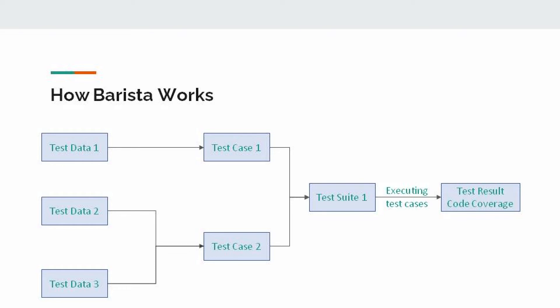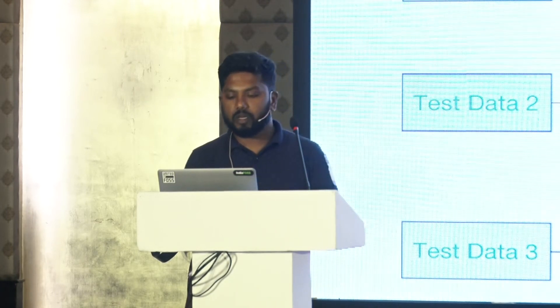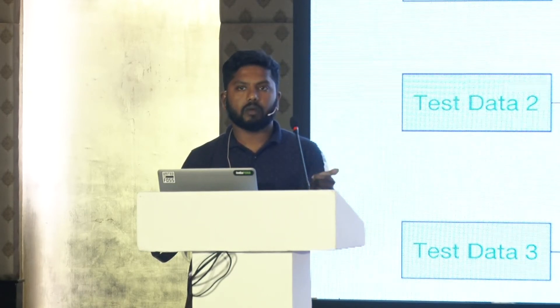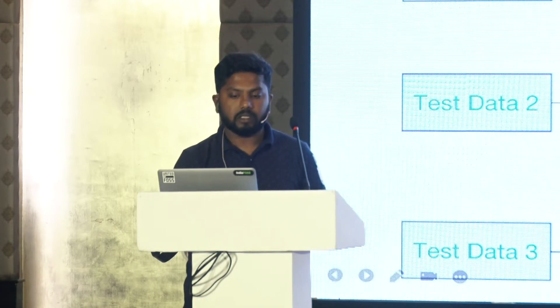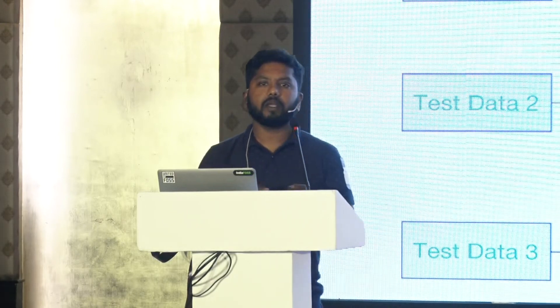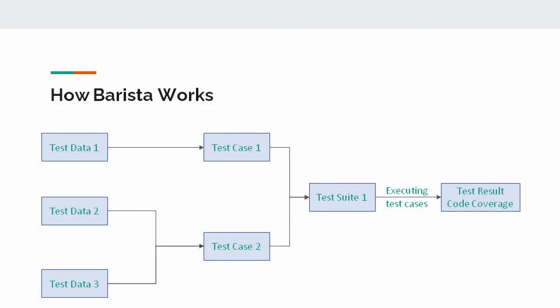Barista has four main doc types. For example, if I'm going to test user creation manually, I will create a user by providing an email ID, first name, last name, mobile number, and then save it — we call that the test data. Once the test data is created, I check basic validations like whether the email ID, mobile number, and full name are correct — those are the test cases. For a single functionality we create multiple test cases, club them into a single test suite, and once executed it creates a test result and an HTML code coverage file.